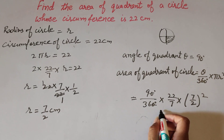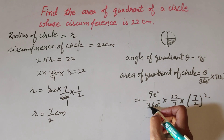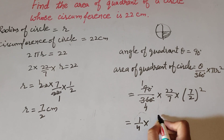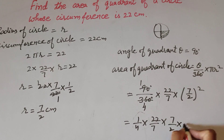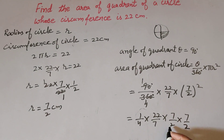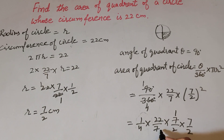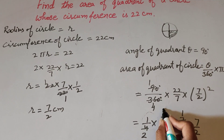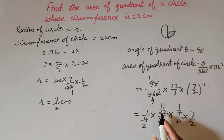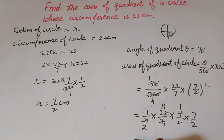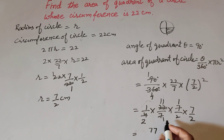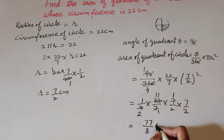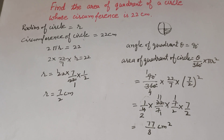The zeros in numerator and denominator cancel, and 9 and 36 are both divisible by 9, so we cancel them to get 1/4. So it is 1/4 multiplied by 22/7 multiplied by (7/2) squared. The 7s cancel and 4 and 22 are both divisible by 2, so we cancel them. The result is 11 × 7 = 77 over 2 × 2 × 2 = 8. So 77/8 cm² is the area of the quadrant of the circle.